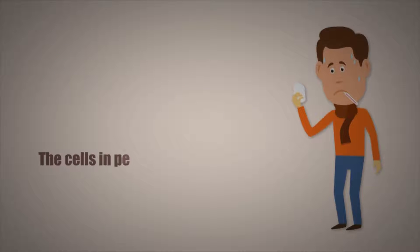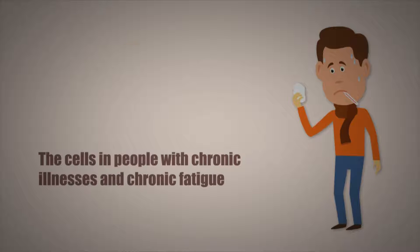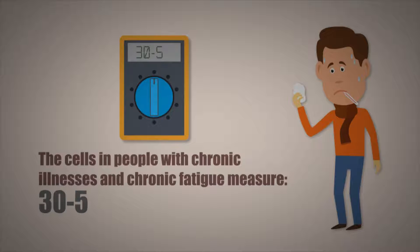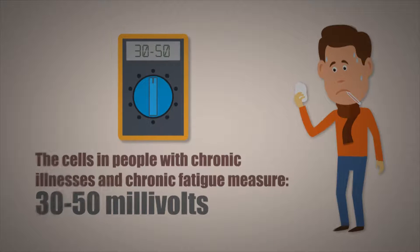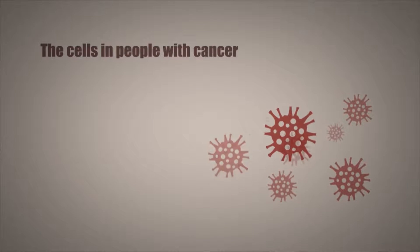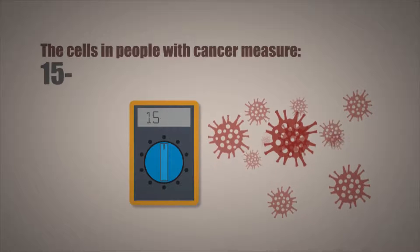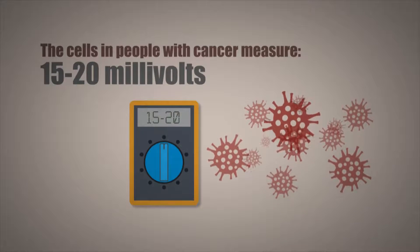The cells in people with chronic illnesses and chronic fatigue usually measure from 30 to 50 millivolts. The cells in people with cancer usually measure from 15 to 20 millivolts.